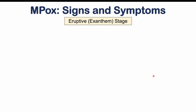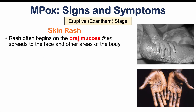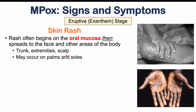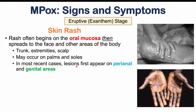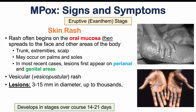After one to four days of the prodromal stage, we enter the eruptive or exanthem stage where a skin rash appears. The rash often begins on the oral mucosa, then spreads to the face and other areas including the trunk, extremities, and scalp, and may have a predilection for the palms and soles. In the most recent outbreak, lesions tend to first appear in the perianal and genital areas. The rash slowly develops into a vesicular or vesicopustular rash, with lesions ranging from 3 to 15 millimeters in diameter — potentially thousands of them — developing over 14 to 21 days.